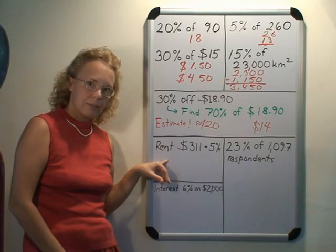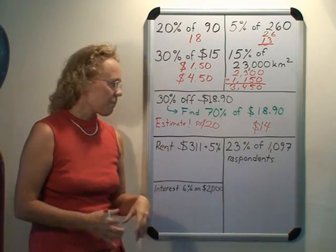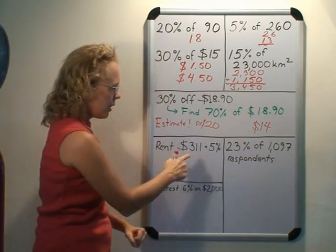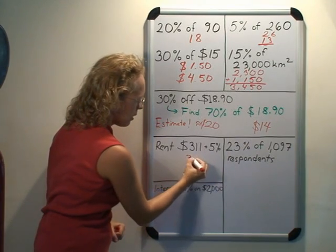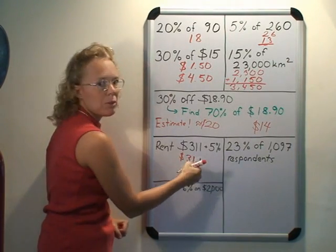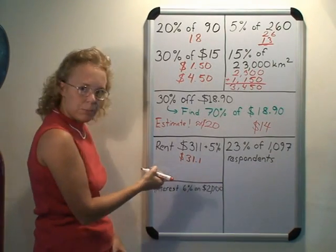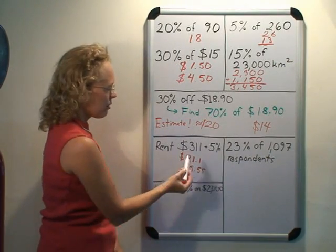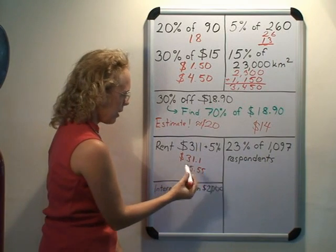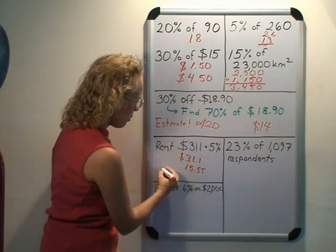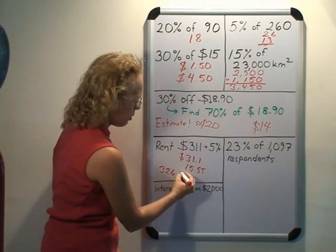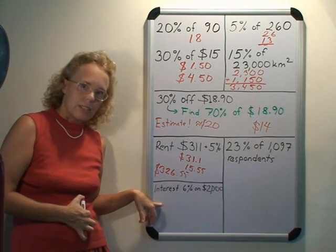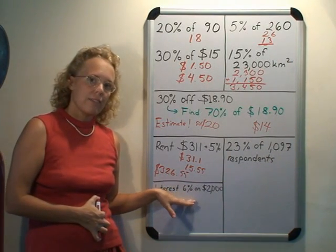Another example: a rent going up by 5%. The original rent is $311. We find 10% first — 10% is $31.10 — and half of that is the 5%, which is $15.55. The new rent is the old rent plus that, so $311 + $15.55 = $326.55.